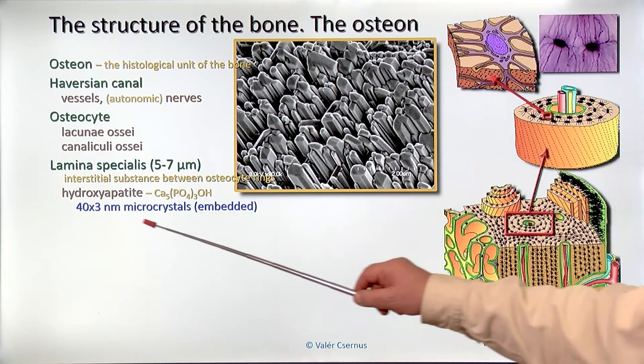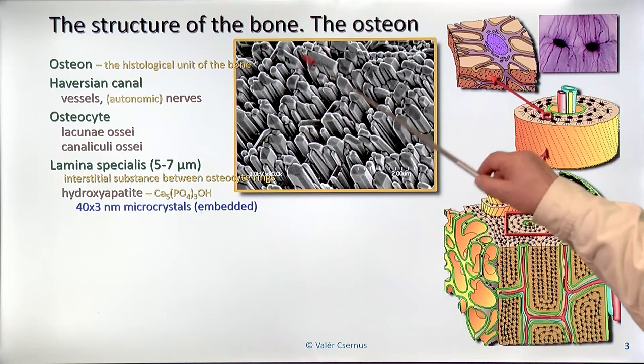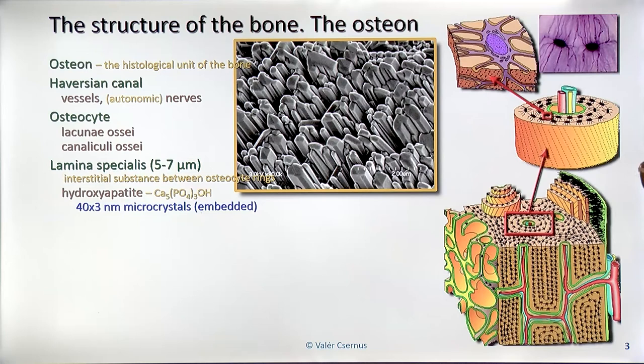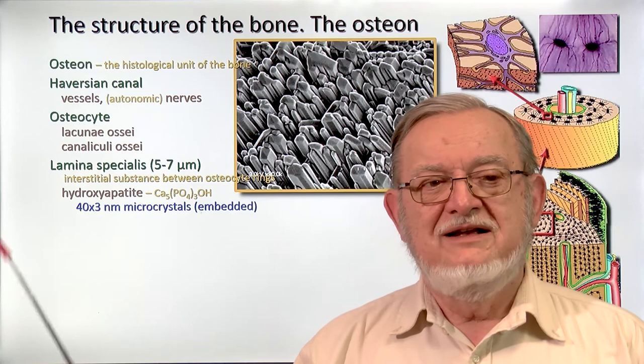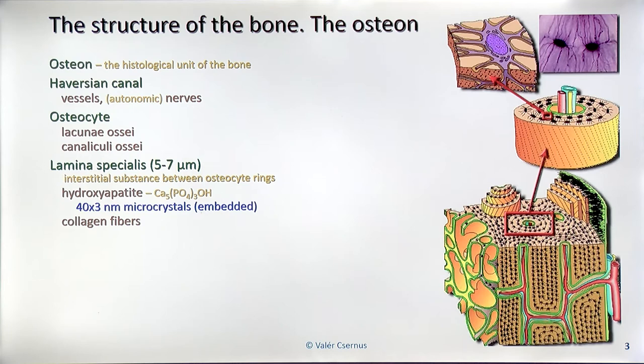These crystals are needle-like, about 40 nanometers in length and 3 nanometers in diameter, as seen under the scanning electron microscope. Of course, these crystals are not free — they are embedded, because if they were free, the bone would behave like a bucket of sand. The second component is the collagen fibers. As briefly mentioned, the durability of bone is due to its collagen fiber content.